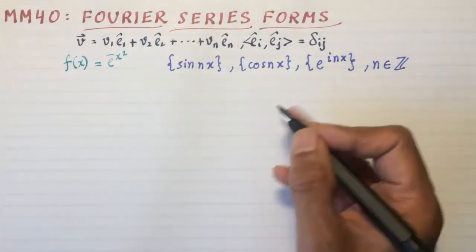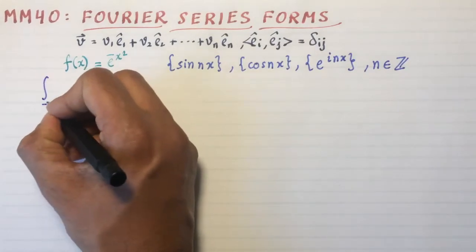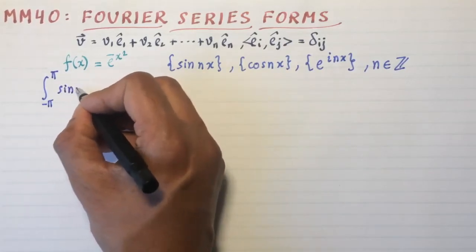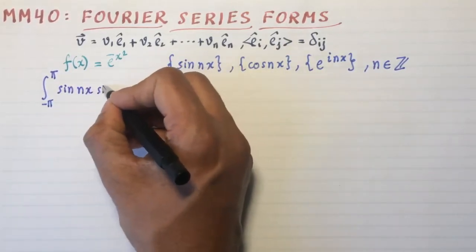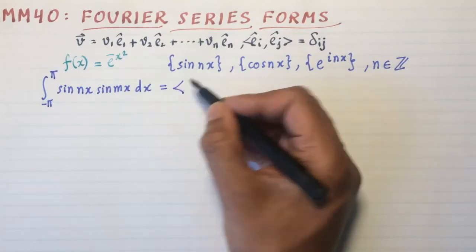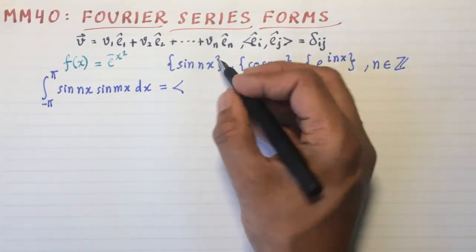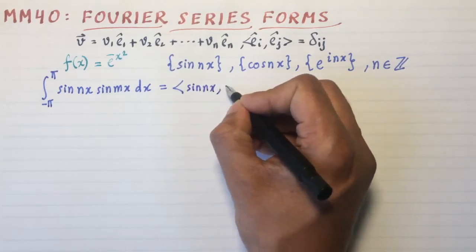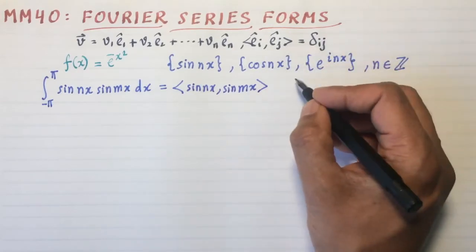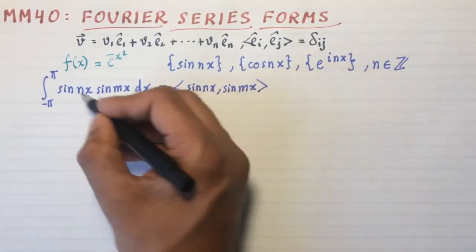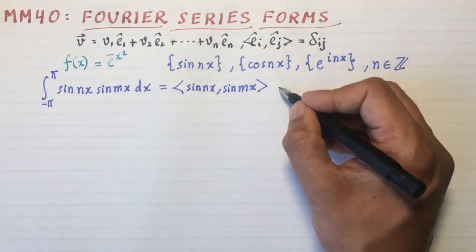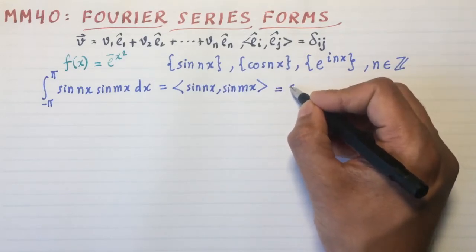So these are orthogonal sets. You can show, for example, and I have in the notes that if you stick to the interval minus π to π, and you take, for example, sin(nx) times sin(mx) dx. Now that is, in fact, the definition of e_i hat dot e_j hat for this basis. So this can be written as <sin(nx), sin(mx)>. This orthogonal inner product is given by the integration over -π to π with the measure dx. That's the definition of the dot product.